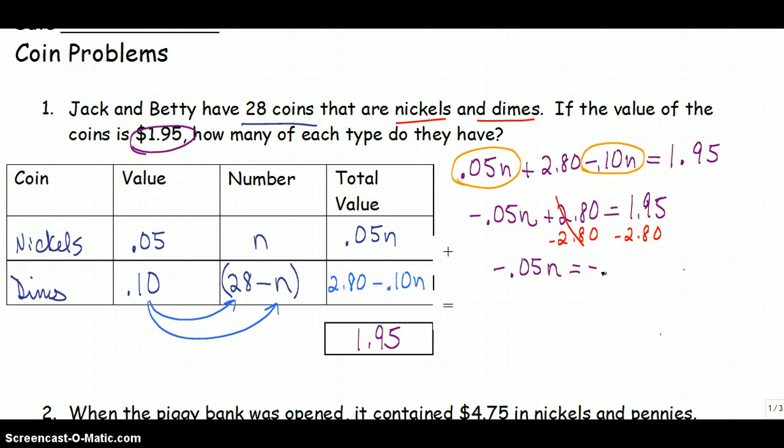So when I subtract that, I get negative .85 because you subtract the small number from the large number, keep the sign of the large. Now I'm going to divide both sides by negative .05, and I get n is equal to 17.